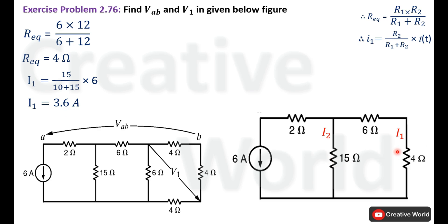So 3.6 Ampere flows through this branch. This same current flows through the 6 Ohm resistance due to series connection, so we have calculated the current through that 6 Ohm resistance. The current through the 2 Ohm resistance is 6 Ampere due to its series connection with the 6 Ampere current source.